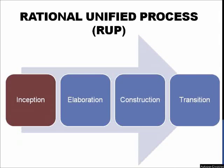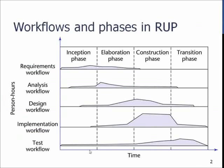The Rational Unified Process, or RUP, as it's more commonly known, is divided into four different process phases: Inception, Elaboration, Construction, and Transition. In this first presentation, we will be talking about the first phase, Inception, what are the objectives in Inception, and what we are actually doing in it.